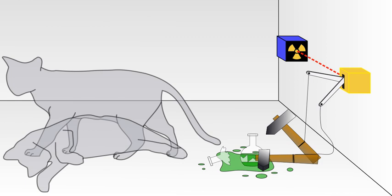Schrodinger wrote: One can even set up quite ridiculous cases. A cat is penned up in a steel chamber, along with the following device, which must be secured against direct interference by the cat. In a Geiger counter there is a tiny bit of radioactive substance, so small that perhaps in the course of the hour one of the atoms decays, but also with equal probability perhaps none. If it happens, the counter tube discharges and through a relay releases a hammer that shatters a small flask of hydrocyanic acid.